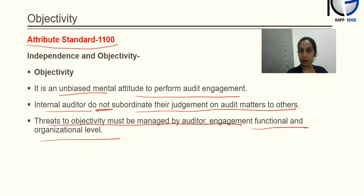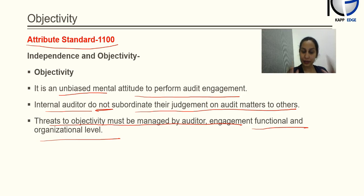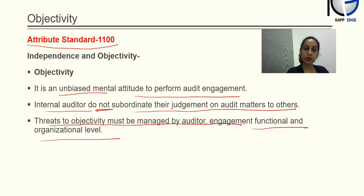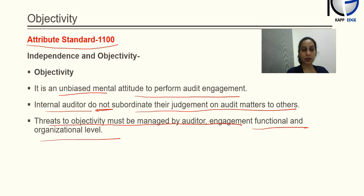The auditor needs to discuss threats with the engagement client at the organizational level. If it is not resolved at the CEO level, then he has to go to the board. And if not the board, then he has to go to those charged with governance. So this is how objectivity works. We have understood the hierarchies in the company, the concept of independence and objectivity, and we have covered Attribute Standard 1100. It is important for us to know these attribute standards as they help understand the concepts and can appear as references in examination questions.